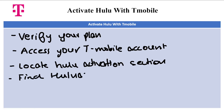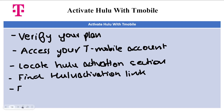Next, find the Hulu activation link. Within the designated section, you should find a link or option to activate Hulu. It might be labeled as 'Activate Hulu', 'Add Hulu', or something similar. Click on the activation link to initiate the activation process.